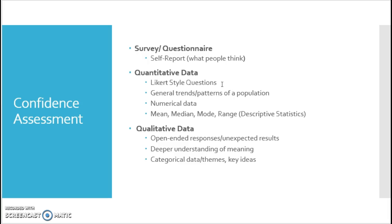What quantitative data can do is give me a general sense of where the class overall fits — it can give me a picture of a certain kind of pattern of a population through numerical data. From these basic questions I can derive descriptive statistics: the mean, the median, the mode, and the range. This can tell me overall how the class assesses itself in relationship to these skills, but it doesn't quite yet get at the meaning of those responses.